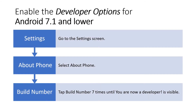For Android 7.1 and lower, go to the Settings screen. Select About Phone. Then look for Build Number and tap it 7 times. A message will pop up telling that you are now a developer.